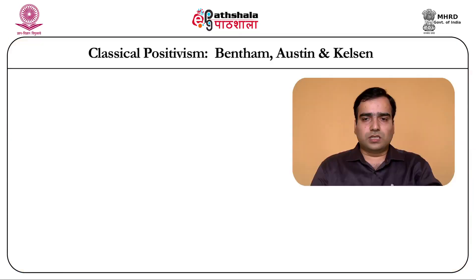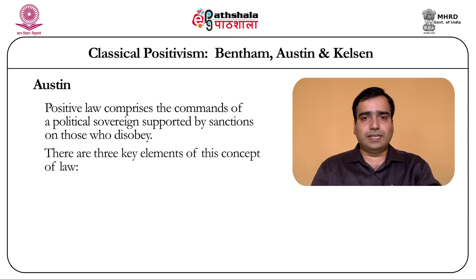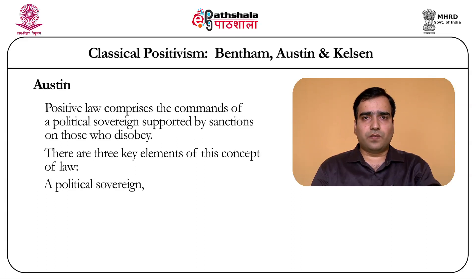Austin acknowledged that customary law may have some practical effects on positive law, but in the legal universe it is not positive law according to Austin because it does not flow from the will of a determinate human being. According to Austin, positive law comprises the commands of a political sovereign supported by sanctions on those who disobey. There are three key elements of this concept of law: firstly, there is a political sovereign; secondly, there is a command; and thirdly, there is a sanction. According to Austin, law is the command of a sovereign backed by sanction.